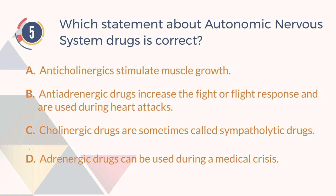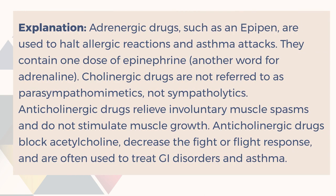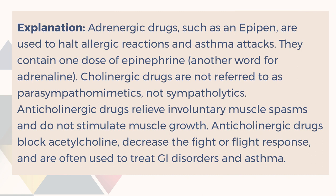The correct answer is D. Adrenergic drugs can be used during a medical crisis. Explanation: Adrenergic drugs, such as an EpiPen, are used to halt allergic reactions and asthma attacks. They contain one dose of epinephrine, another word for adrenaline. Cholinergic drugs are referred to as parasympathomimetics, not sympatholytics. Anti-cholinergic drugs relieve involuntary muscle spasms and do not stimulate muscle growth. Anti-cholinergic drugs block acetylcholine, decrease the fight-or-flight response, and are often used to treat gastrointestinal disorders and asthma.